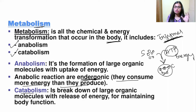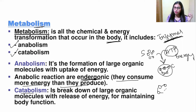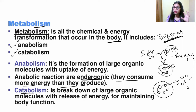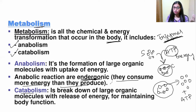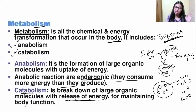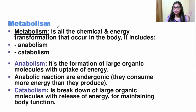The next type is catabolism. Catabolism means breakdown. Anabolism means producing new complex molecules, but catabolism means the complex molecule is broken down into smaller molecules. After breakdown, ATP is released. In catabolism, ATP is not utilized — ATP will be released. Catabolism is the breakdown of large organic molecules with release of energy. Here, energy is released, not utilized. For maintaining body functions, energy is released through this process.